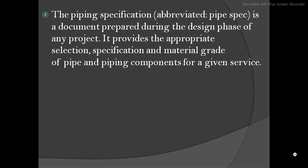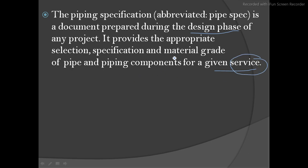The piping specification is abbreviated as pipe spec. It is a document prepared during the design phase of any project — when the project gets started, you need a spec. Simultaneously, before the project starts you will get a spec in the design phase. It provides the appropriate selection specification and the material grade of a pipe and the piping components for a given service. Depending upon the service, you will get a proper material for the pipe and the piping components.